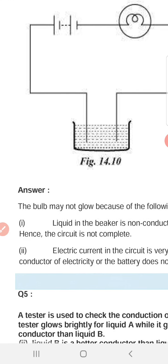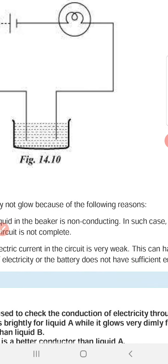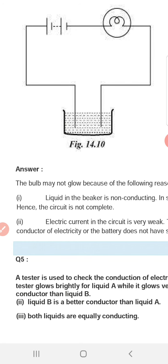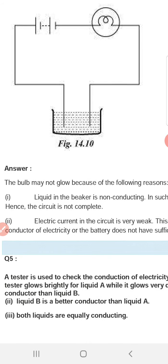The bulb may not glow because of the following reasons. First reason: The liquid in the beaker is non-conducting. Most liquids do not conduct electricity.